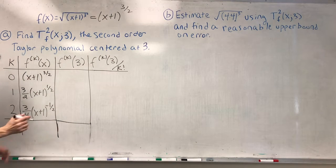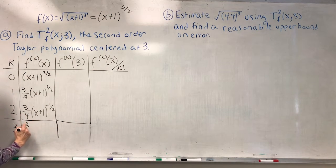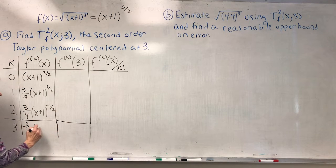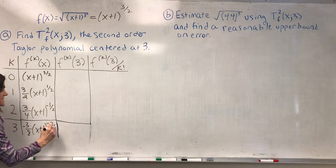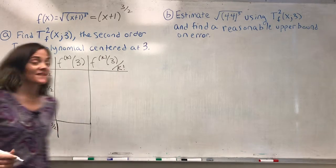Then I need one more derivative. So I have minus 3 over 8 x plus 1 to the minus 3 halves. Okay, fantastic.